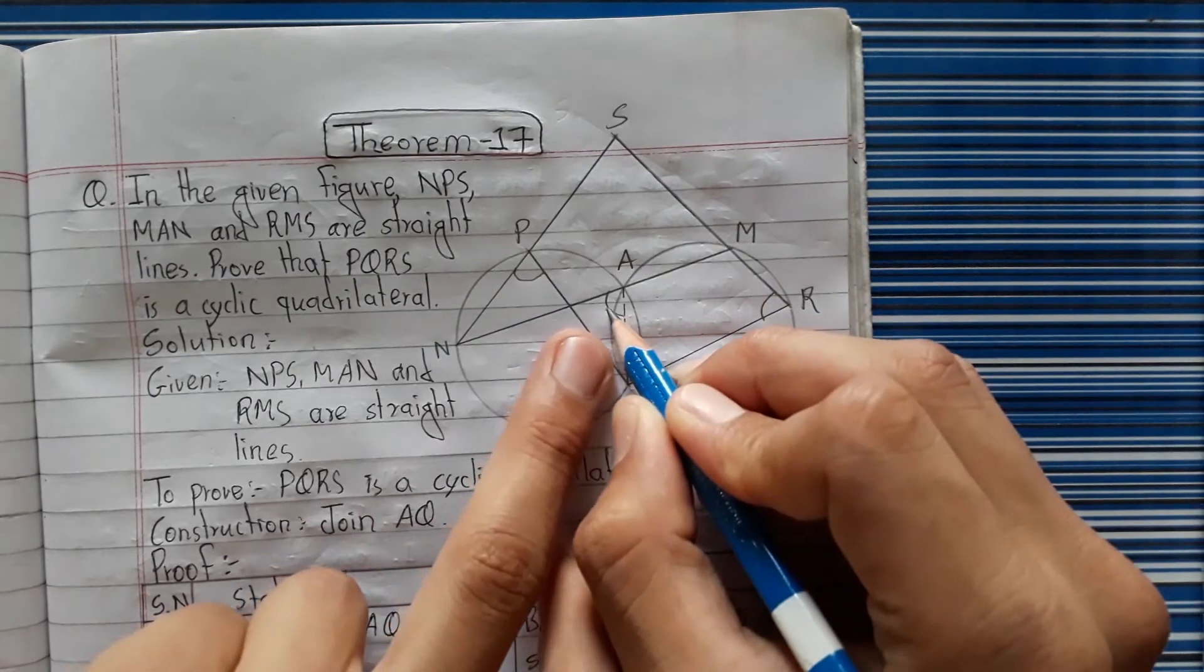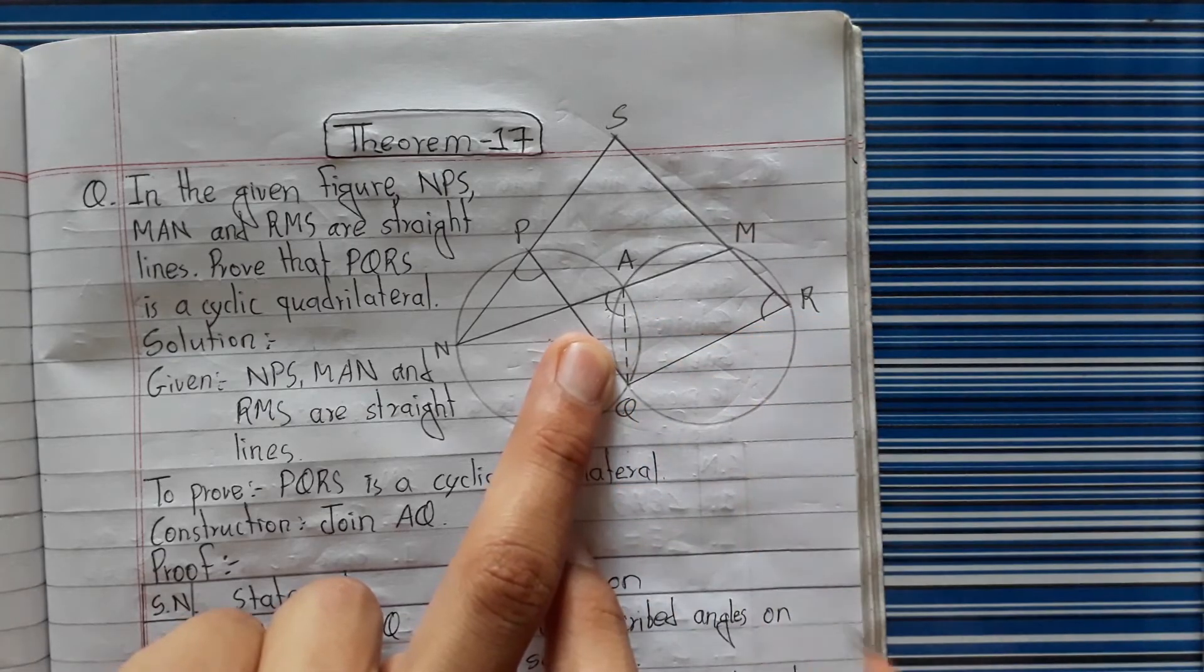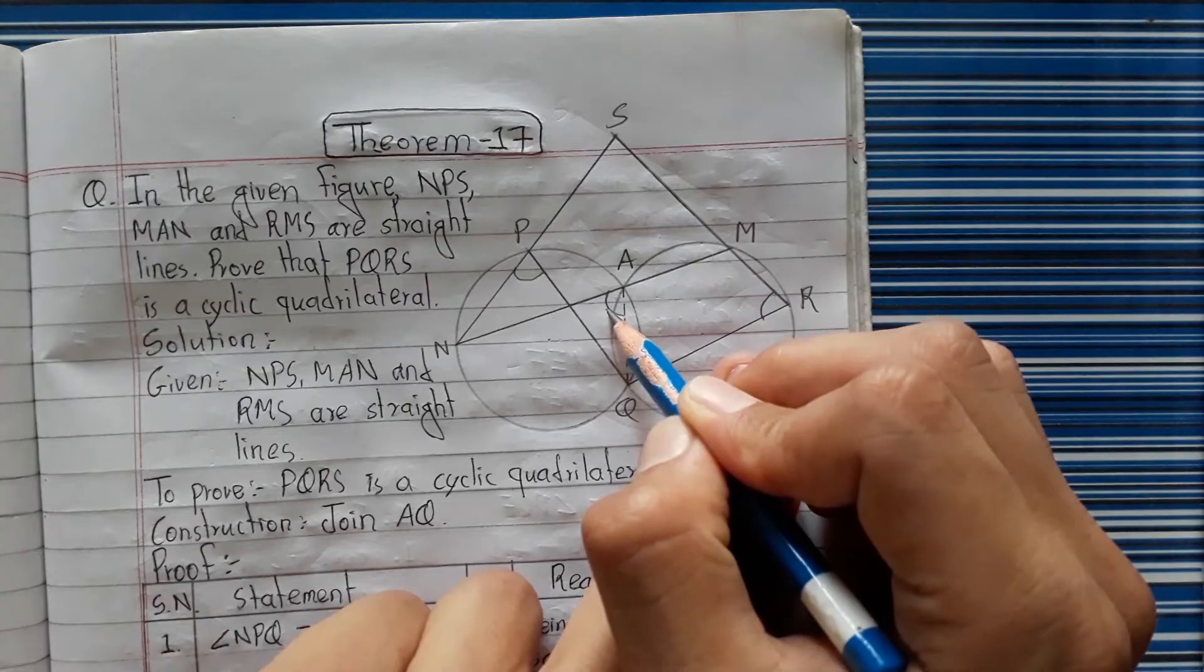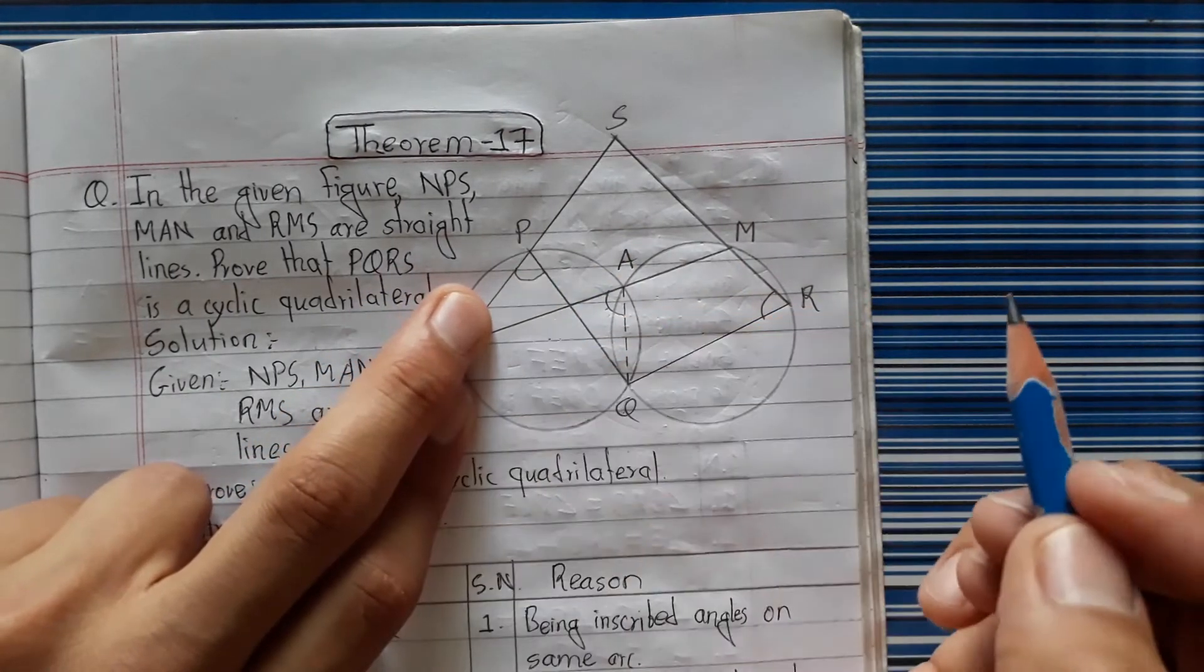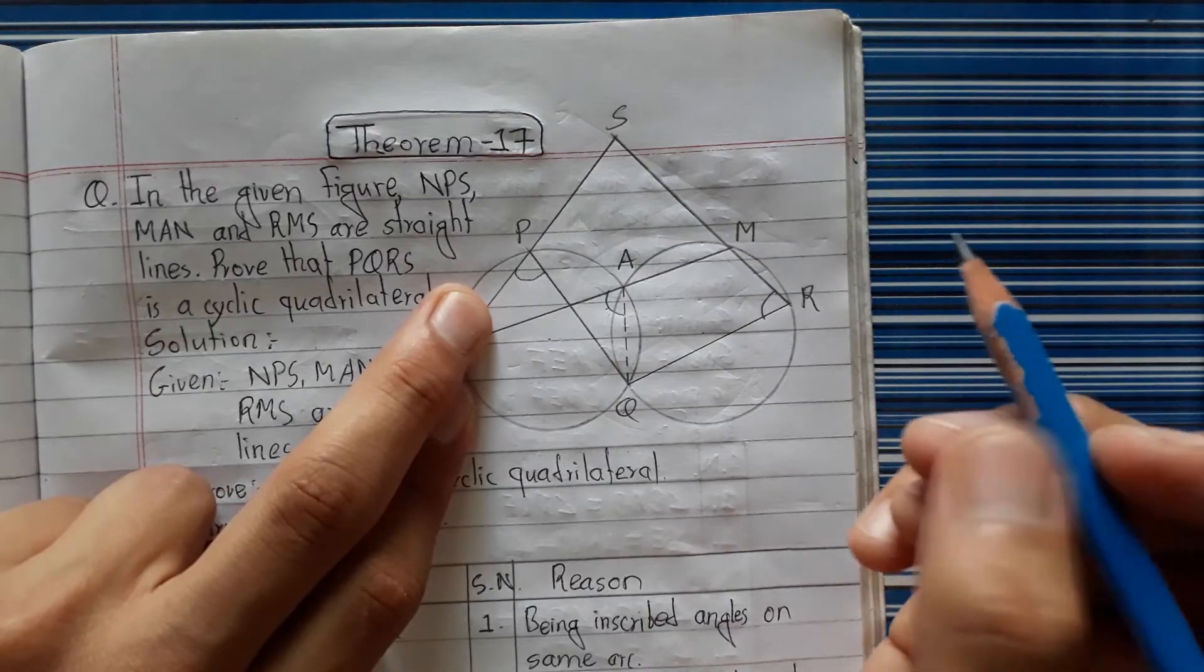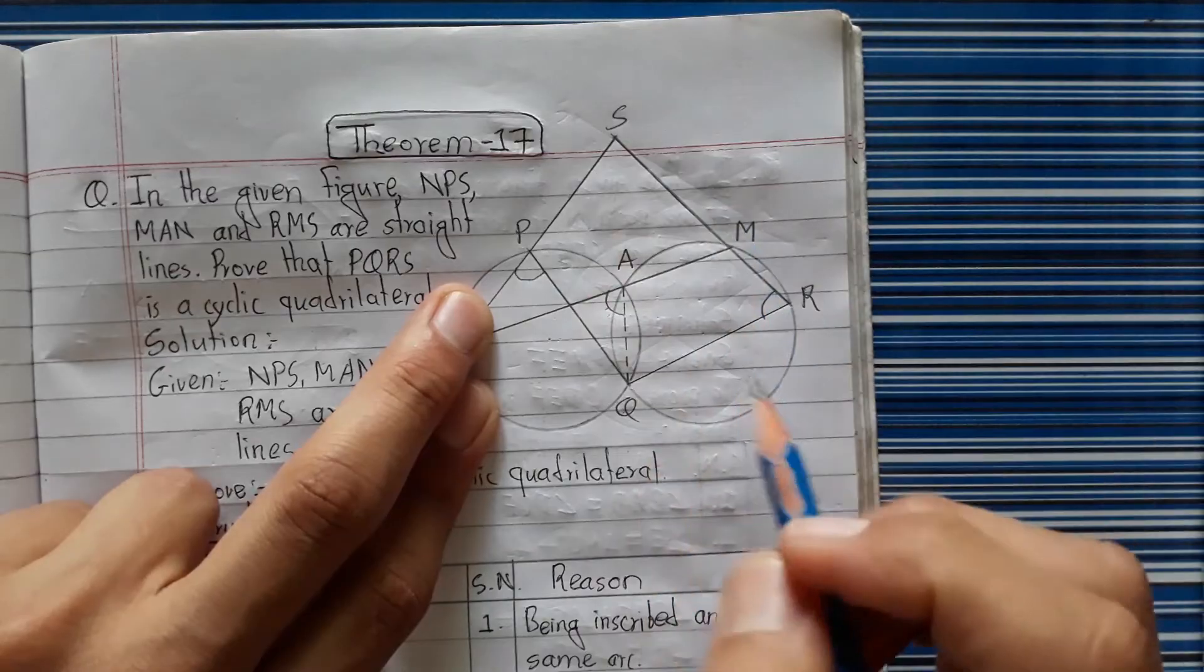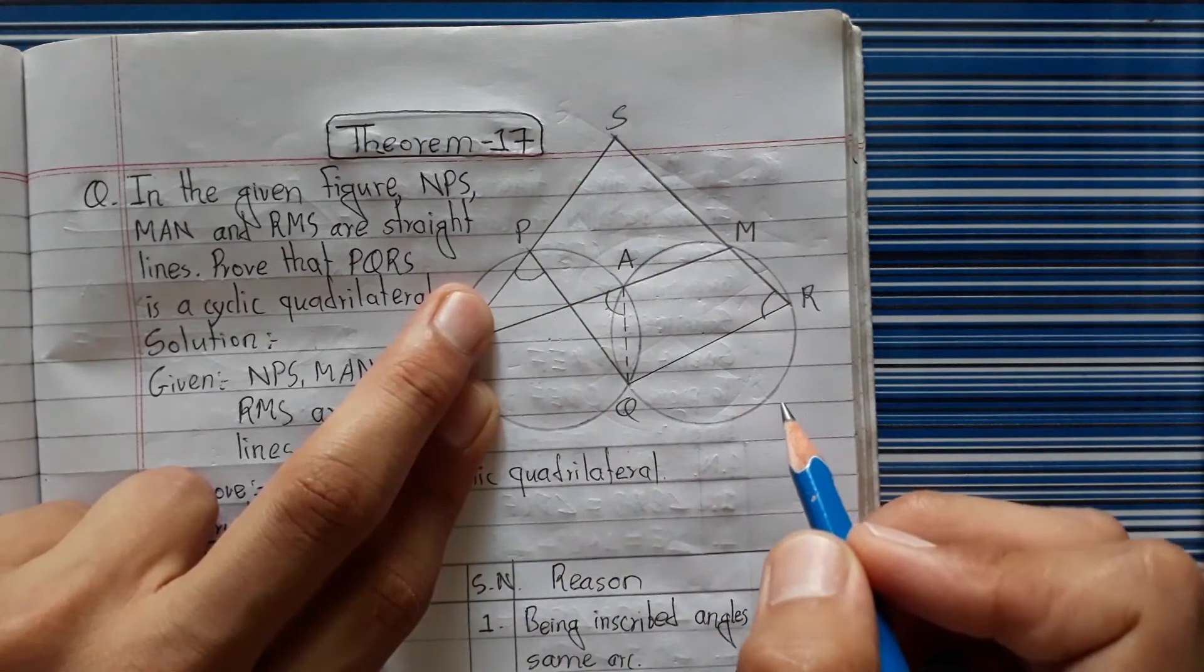By using the exterior angle and opposite angle property, the exterior angle equals your angle. Your angle equals your angle. PQRSI is a cyclic quadrilateral.